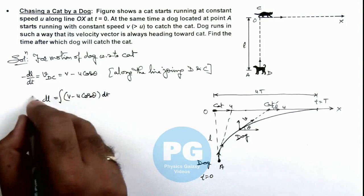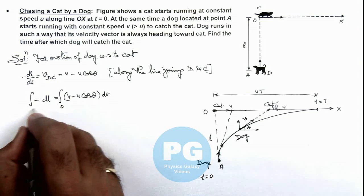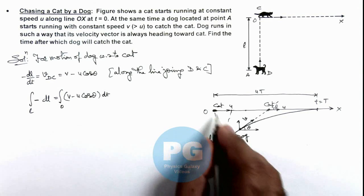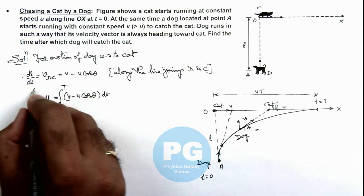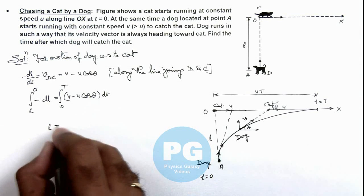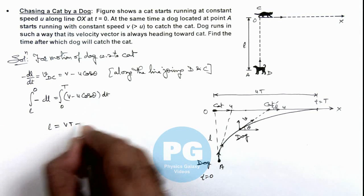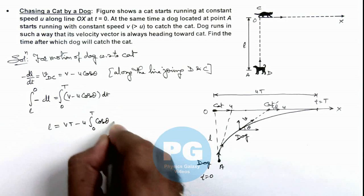If we integrate this expression we can say at t equal to zero the value of l was l, as initially the dog cat separation was l. And at time t this separation decreases to zero. So this can be written as l is equal to v t minus u integration of zero to t cos theta d t.